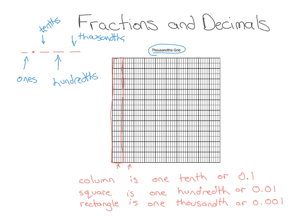So you can see how many columns are in our grid. If we start counting, there's one, two, three, four, five, six, seven, eight, nine, ten. So if there's ten columns, one column is equal to one-tenth of the whole grid. We can write this value for every single column that is colored in on a thousandths grid. So zero point one, or one-tenth, is what that looks like on a thousandths grid — it's one column colored in.